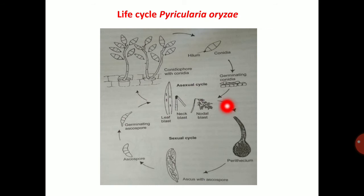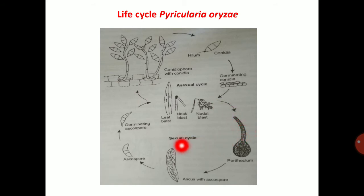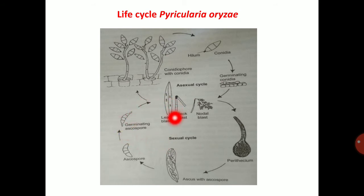For the sexual cycle: Pyricularia oryzae is a heterothallic fungus, meaning male and female structures are on separate mycelia. It produces pear-shaped or pyriform perithecia containing asci and ascospores that are fusiform-shaped and four-celled. Ascospores germinate and produce symptoms under favourable conditions.